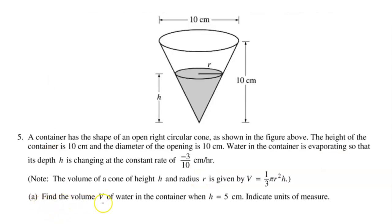Part A says find the volume of water in the container when the height is five centimeters. However, knowing the height does not automatically tell us the radius, which we will need in order to calculate the volume. So what do we do?